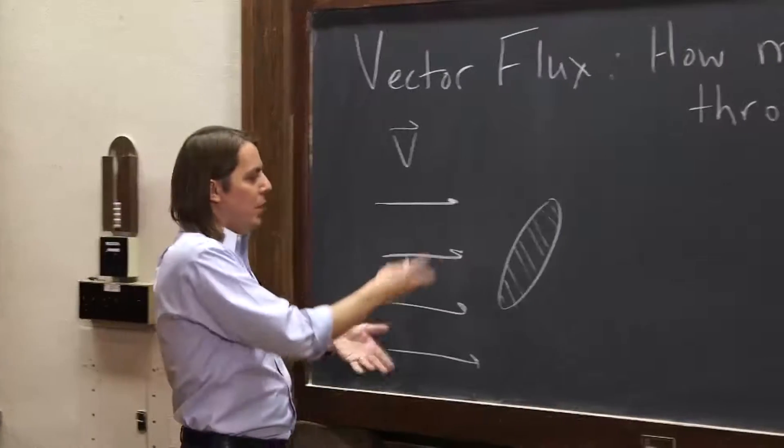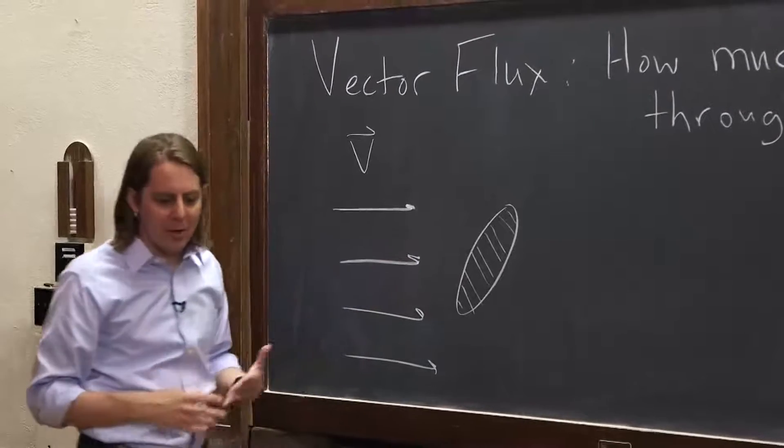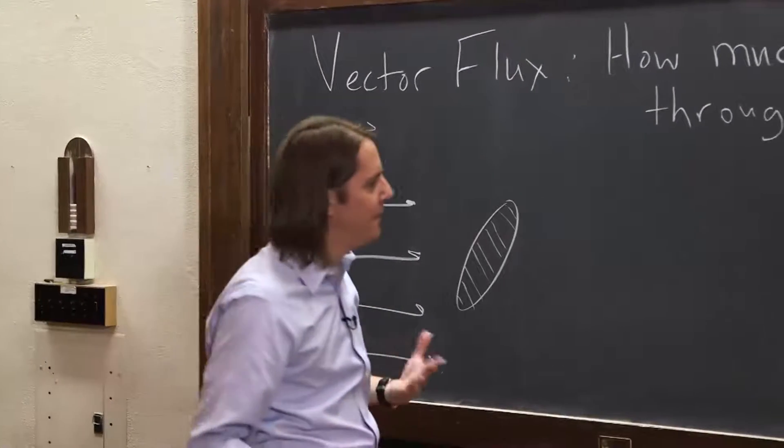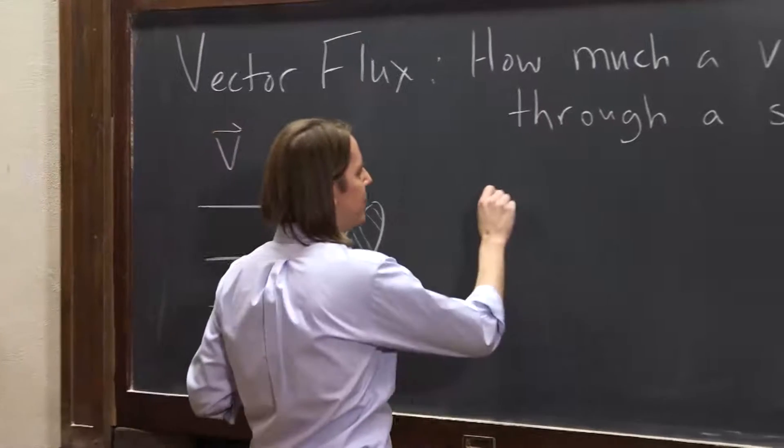So when you say how much, you just say, well, I don't know, maybe two would fit through there. So let's think about how we decide to figure out what the vector flux is. It really depends on three things.